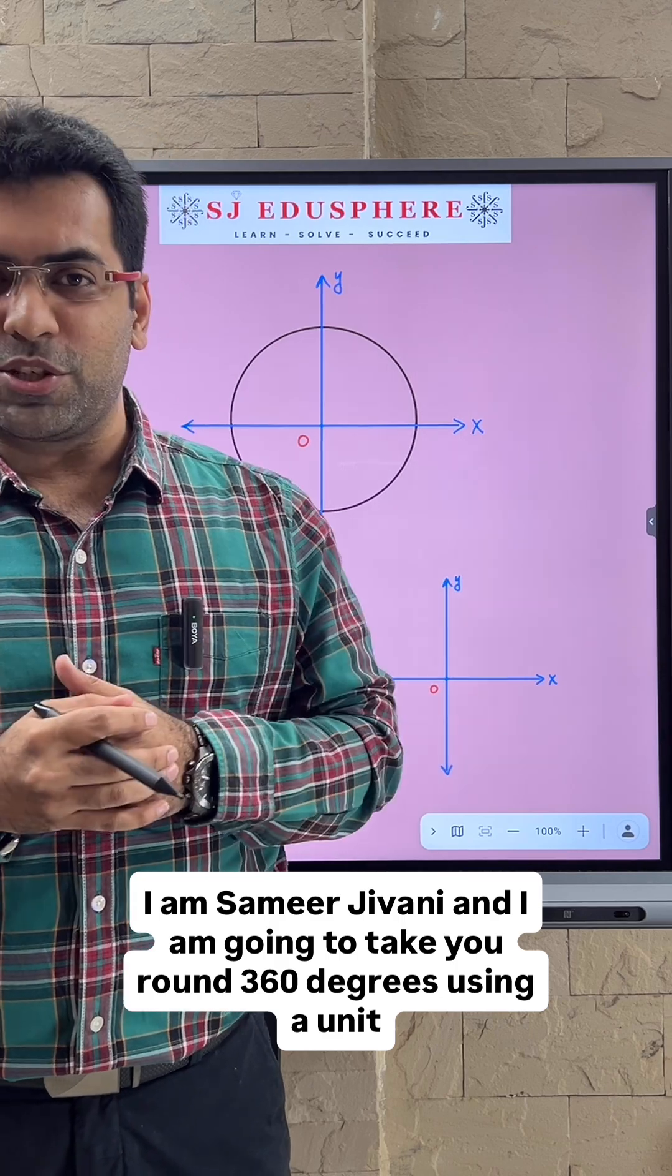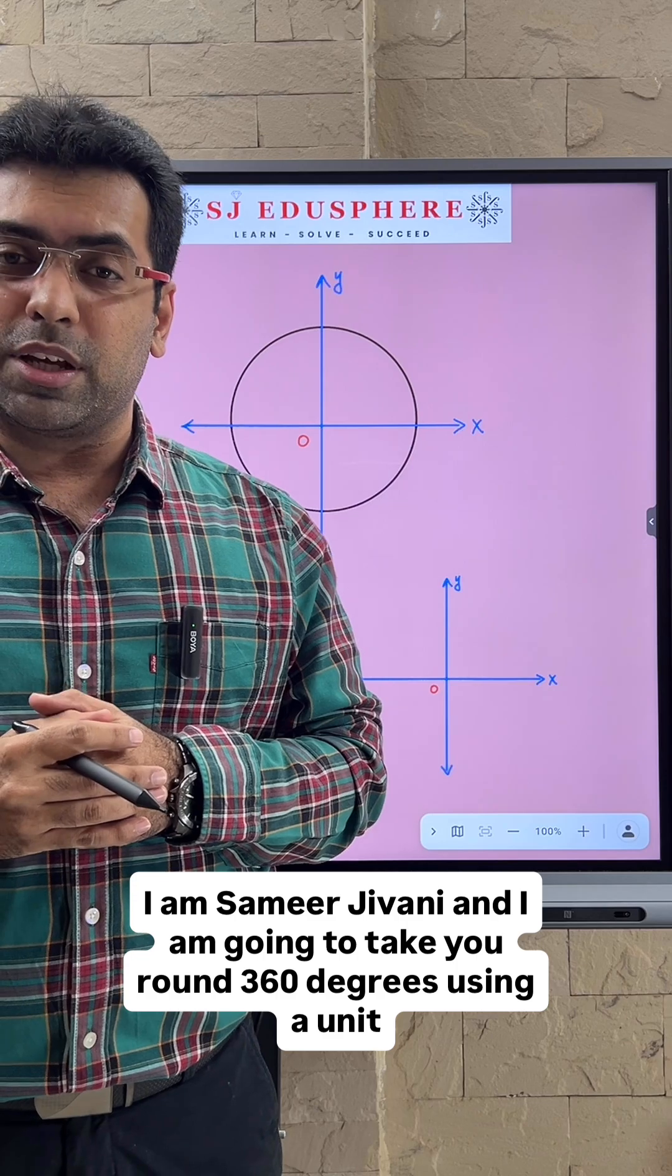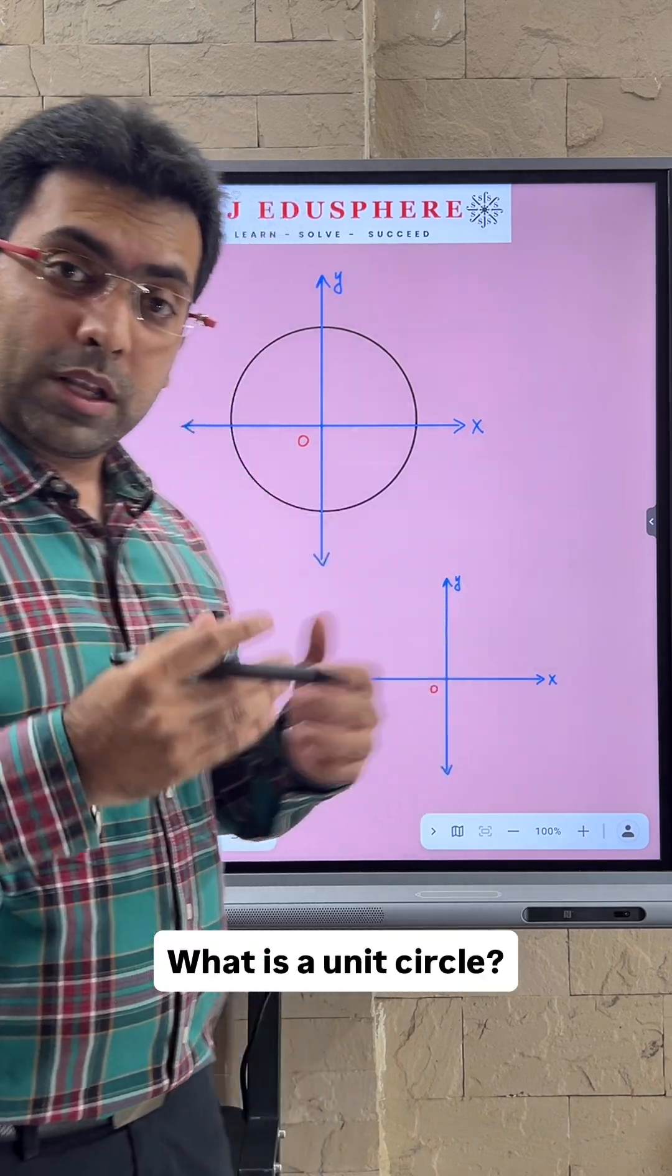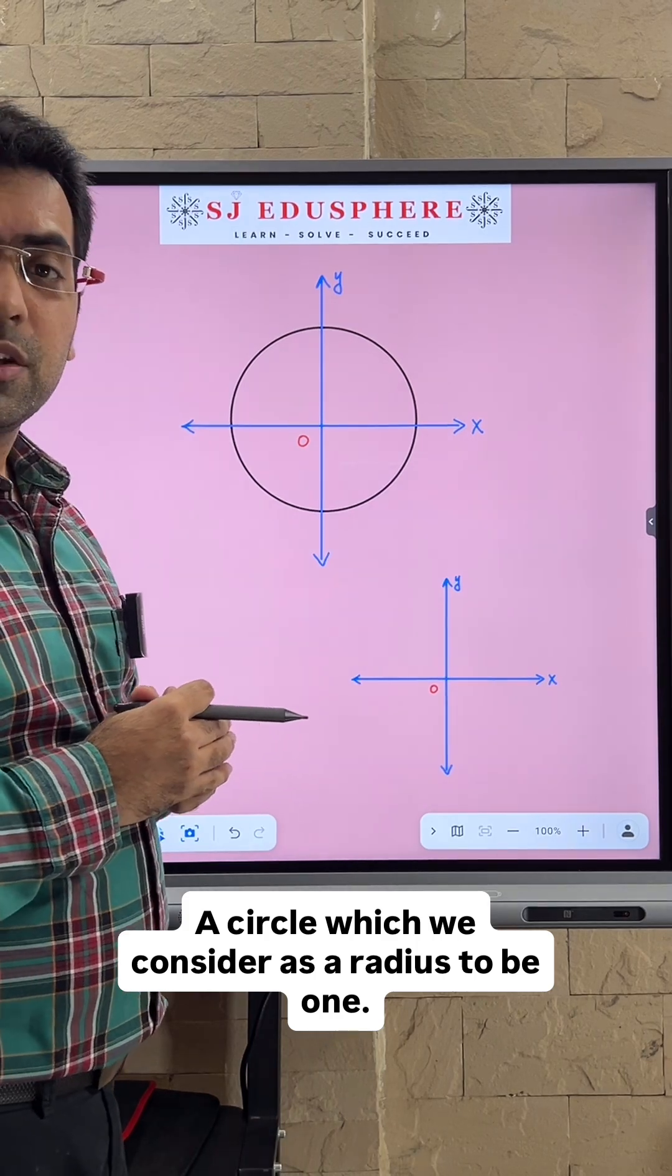I am Samir Jeevani and I'm going to take you around 360 degrees using a unit circle. What is a unit circle? A circle which we consider to have a radius of 1.